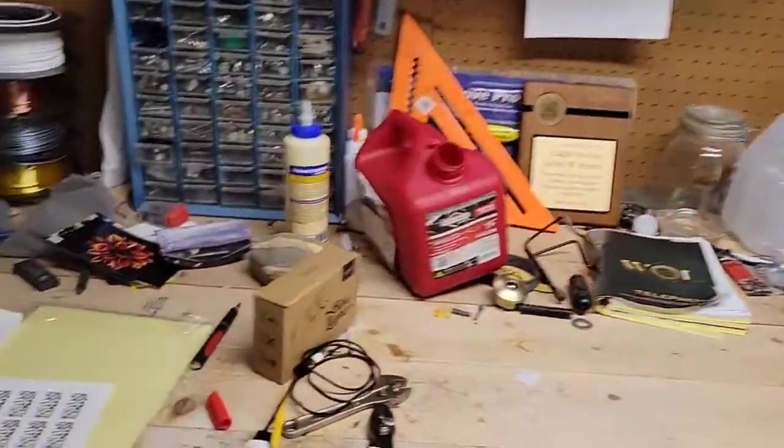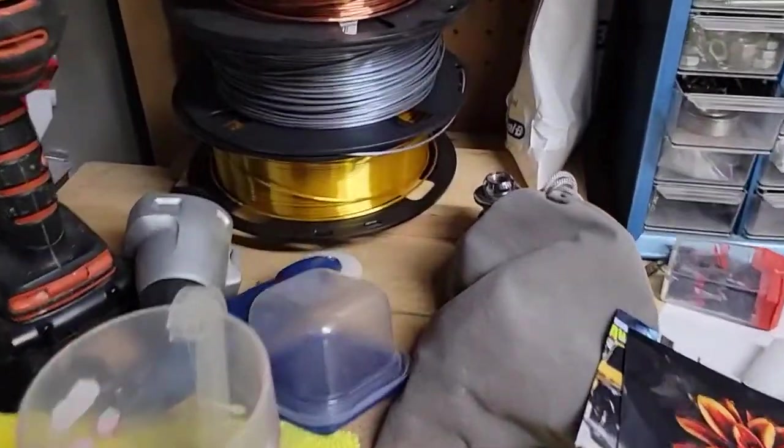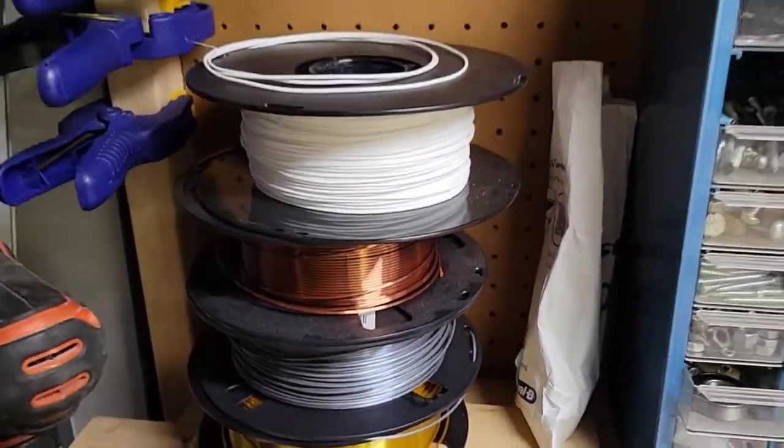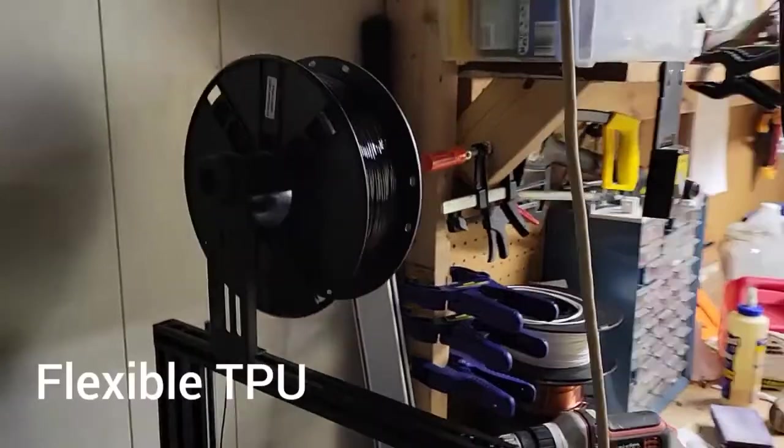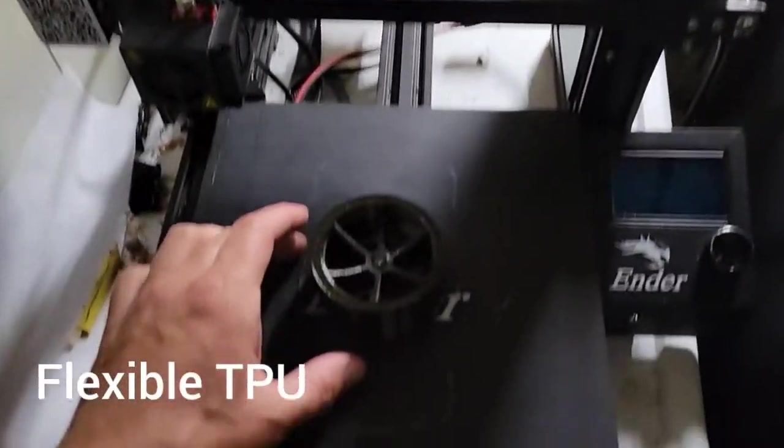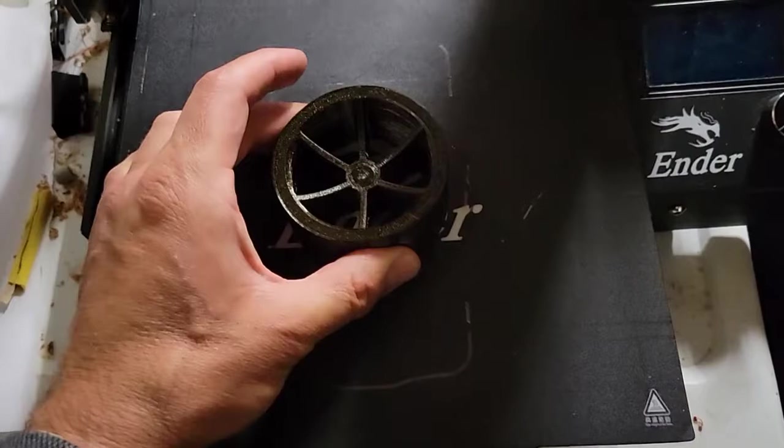We of course have our choice of filaments. And I wasn't sure if we should go with gold, silver, copper, or white. But instead, I thought we'll go with black. The reason we want this black filament is it's actually a stretchy filament. So I thought we'll get sort of almost a rubbery type feel.